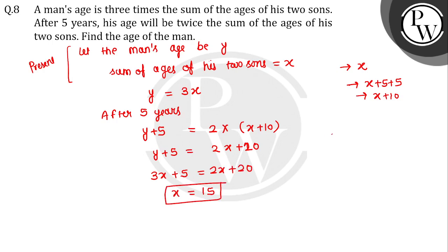X is 15, तो बेटा, Y is equal to three into X, मतलब three into fifteen, मतलब 45 years. तो man की age क्या हो गई बेटा, 45 years.